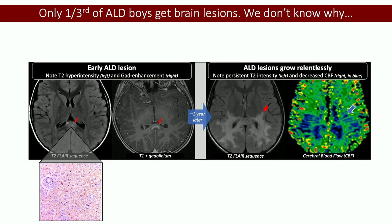Just to give you a sense of where this started — a quick background for those who are slightly unfamiliar. As most of you know, only about a third of ALD boys historically would get brain lesions. We don't know why some boys get these and others don't. This is one of the most important questions for the community: understanding why some kids get this and others are spared.